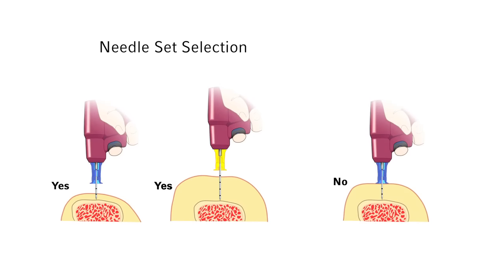If the needle set is inserted through the soft tissue and does not reach the bone, or the 5 mm mark is not visible above the skin with the tip of the needle set touching the bone, the needle set is too short. A longer needle set or alternate site should be chosen prior to penetration of the bone cortex.